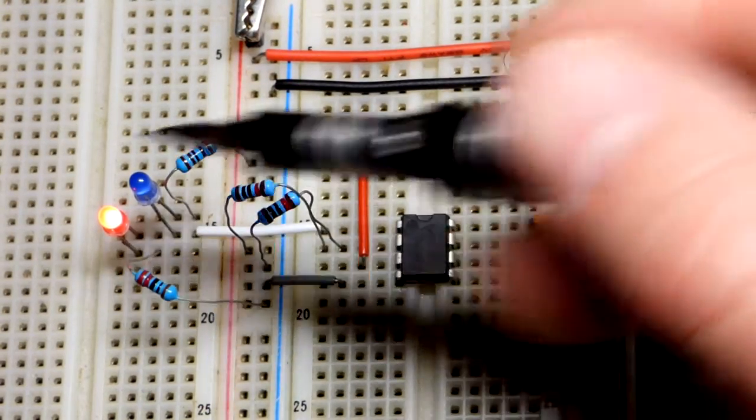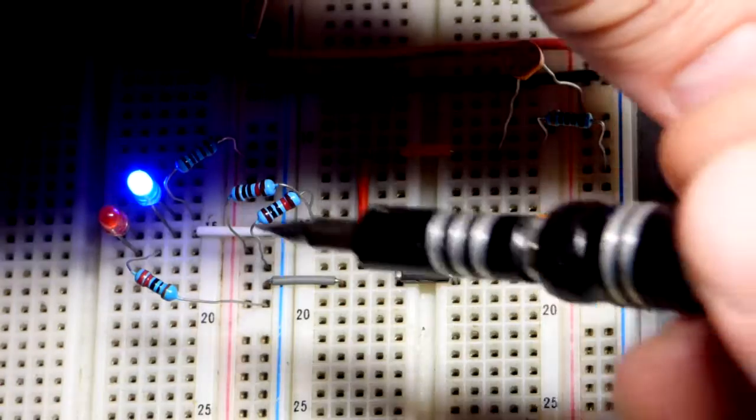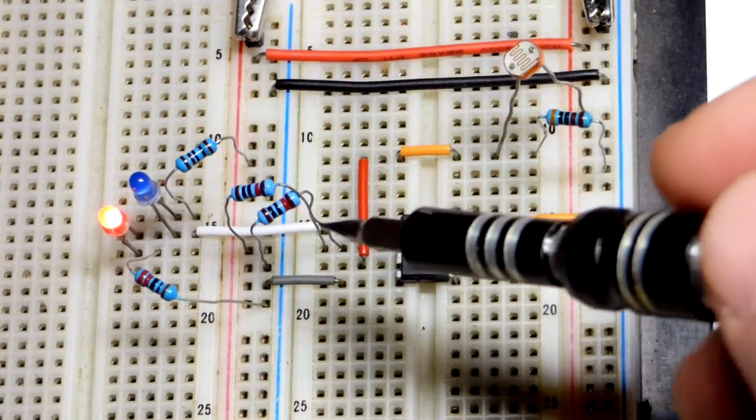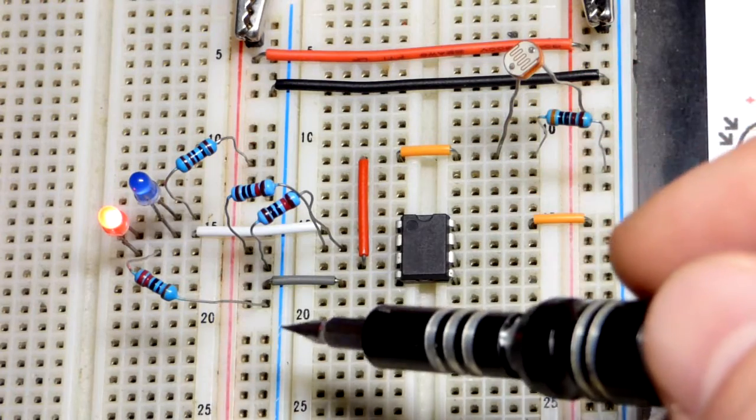So we got positive there. So the blue LED will light up when the output's low, when it's connected to ground, as you can see there. When the output is high, then the red LED will light up, as you can see that current path there.